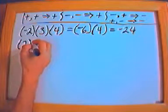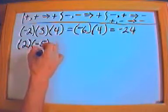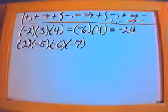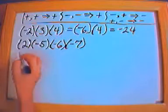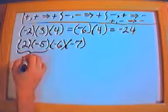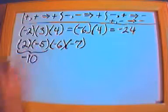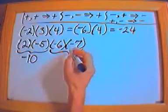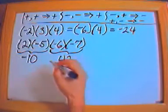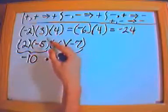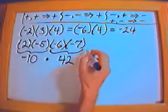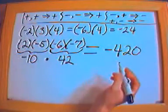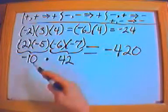What if we had 2 times negative 5 times negative 6 times negative 7? I'll break it up slightly differently. 2 times negative 5 is negative 10 because it's a negative times a positive. Then 6 times 7 separately: 6 times 7 is 42, and negative times negative is positive, so that's positive 42. Now negative 10 times positive 42: negative times positive gives you negative, and 10 times 42 is 420, so the answer is negative 420.